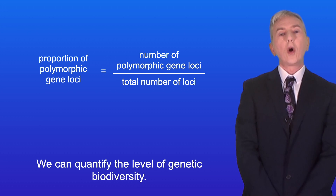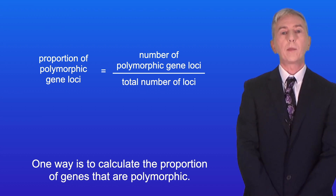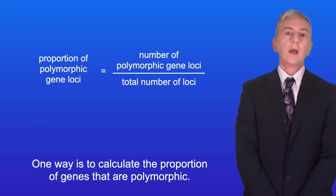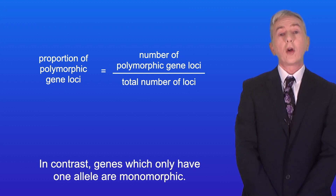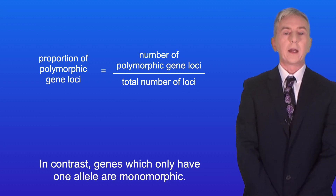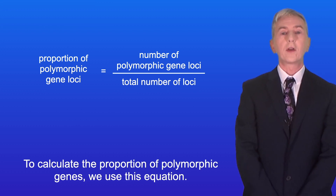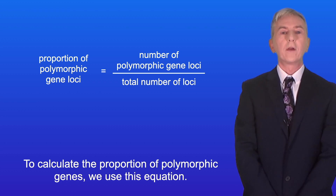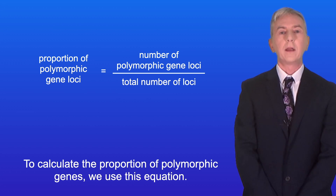We can quantify the level of genetic biodiversity. One way is to calculate the proportion of genes that are polymorphic. Remember that polymorphic genes have more than one allele, whereas monomorphic genes only have one allele. To calculate the proportion of polymorphic genes we use this equation: the proportion of polymorphic gene loci equals the number of polymorphic gene loci divided by the total number of loci.